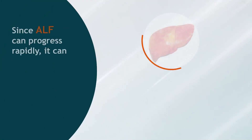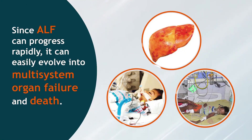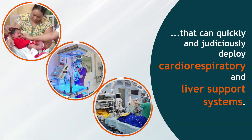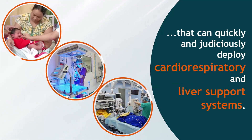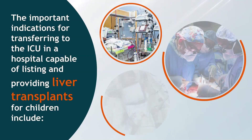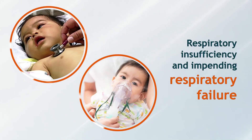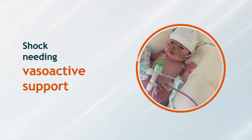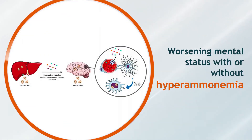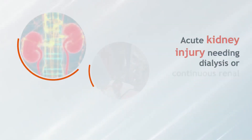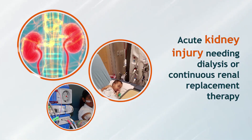Since ALF can progress rapidly, it can easily evolve into multi-system organ failure and death. Hence, the disease requires close monitoring and immediate transfer to a higher-level care center that can quickly and judiciously deploy cardiorespiratory and liver support systems. Important indications for transferring to the ICU in a hospital capable of listing and providing liver transplants include respiratory insufficiency and impending respiratory failure, shock needing vasoactive support, worsening mental status with or without hyperammonemia, coagulopathy needing multiple types of blood and plasma products, and acute kidney injury needing dialysis or continuous renal replacement therapy.